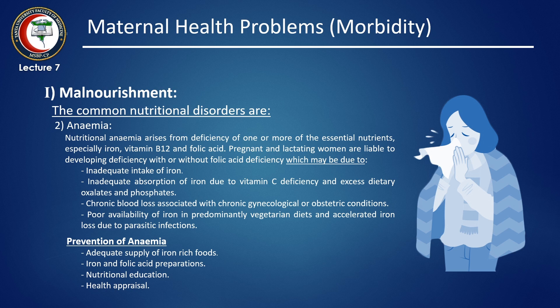Also, chronic blood loss associated with chronic gynecological or obstetric conditions, and poor availability of iron in predominantly vegetarian diets, and accelerated iron loss due to parasitic infection.